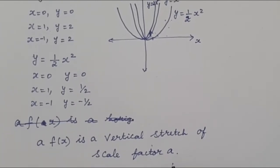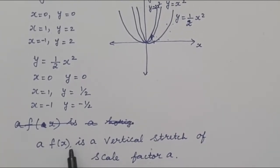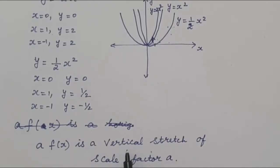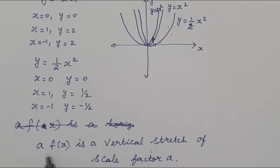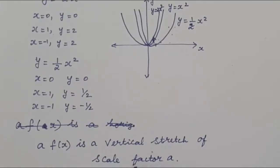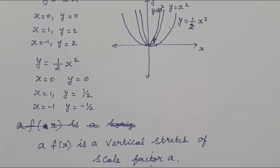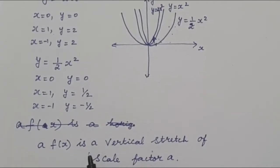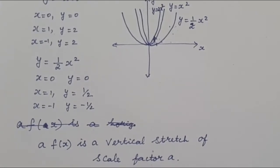Always remember: whenever it is in the y direction — the vertical direction — whether it is addition or multiplication, it does not change the sign. But when it is in the horizontal direction, that is inside the bracket, when it is positive it becomes negative. When it is multiplication it becomes division.